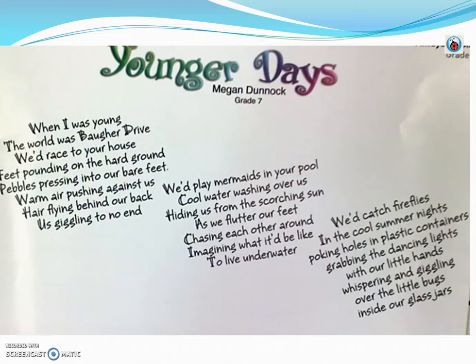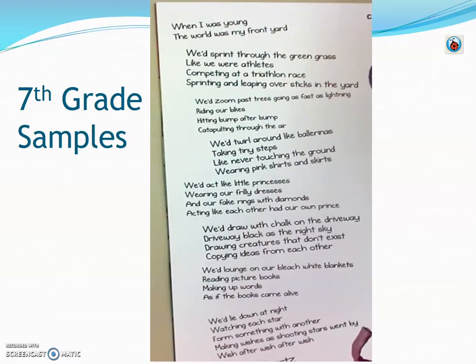Here are a few examples of poems that students from previous years have written — imitations of the When I Was Young poem that you just read. This one's a three-stanza poem; if you want, pause the video and read it now. Here's another example written by a seventh-grade student that ended up in the ECWIS. You can pause the video and read through this example.